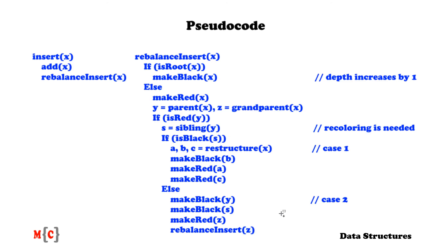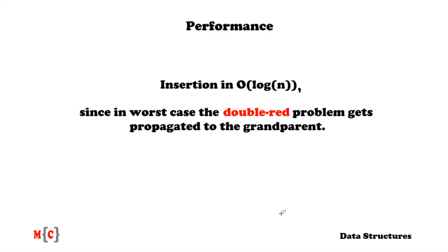To end this video, a remark on performance: insertion runs in O(log N). In the worst case the double red problem gets propagated to the grandparent and this can keep happening — but each time it propagates, we only process nodes moving upward, so the double red does not spread to the other half of the subtree. This means we truly have an O(log N) algorithm, which is very nice. We put in some extra effort, but what we get is a self-rebalancing tree.